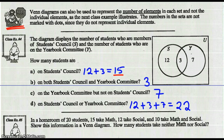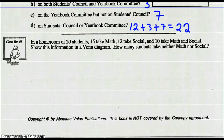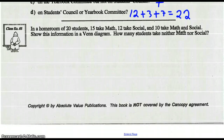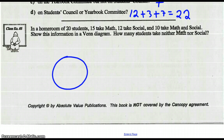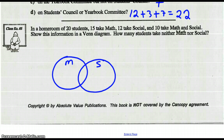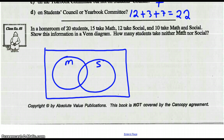Looking at Example 5. In the homeroom of 20 students, 15 take math, 12 take social, 10 take math and social. Show the information in a Venn diagram and then answer the question: how many students take neither math nor social? So we want one circle for math, another circle for social, and then we've got our classroom of 20 students.